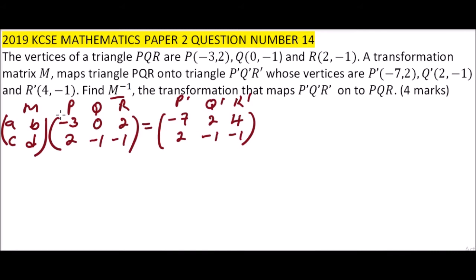A times -3 gives you -3A. B times 2 gives you +2B. A times 0 is 0, B times -1 gives you -B. A times 2 is 2A minus B. That is the first row.